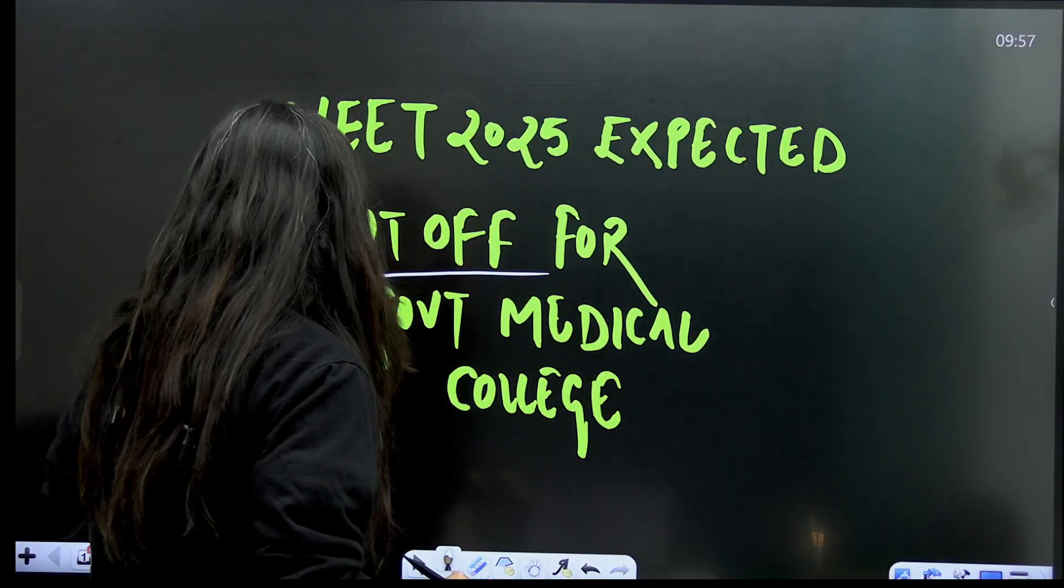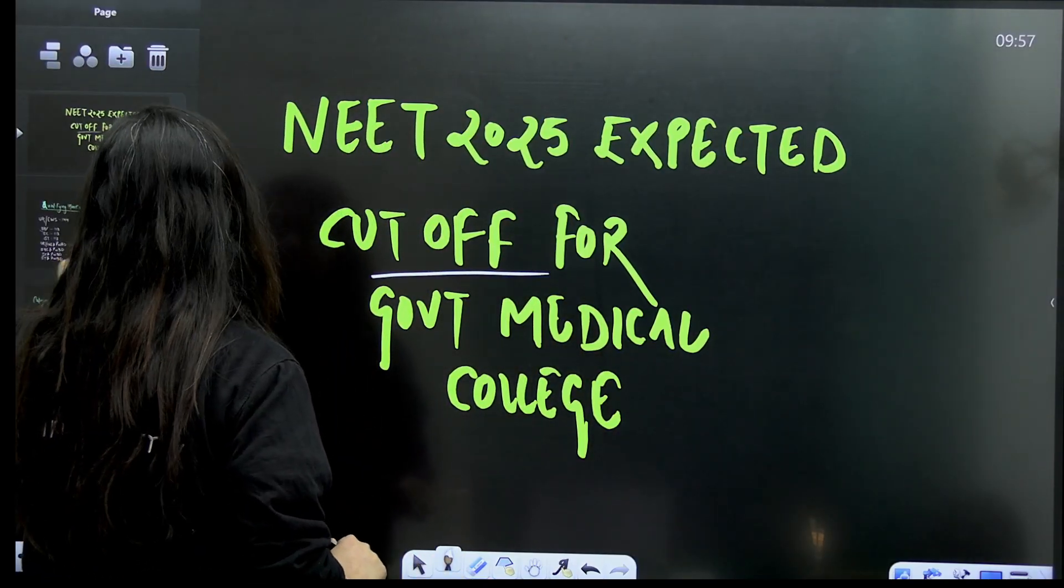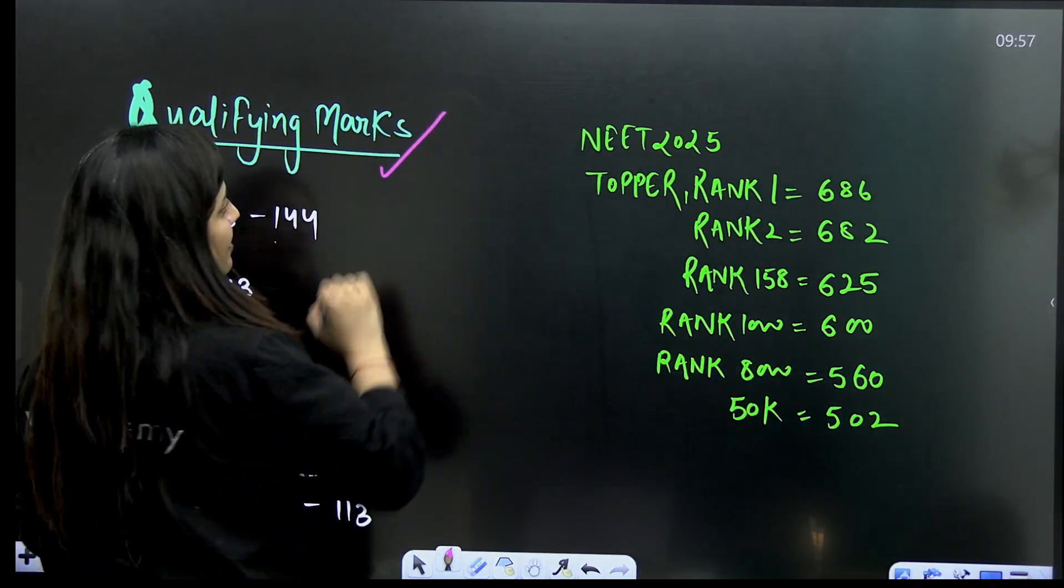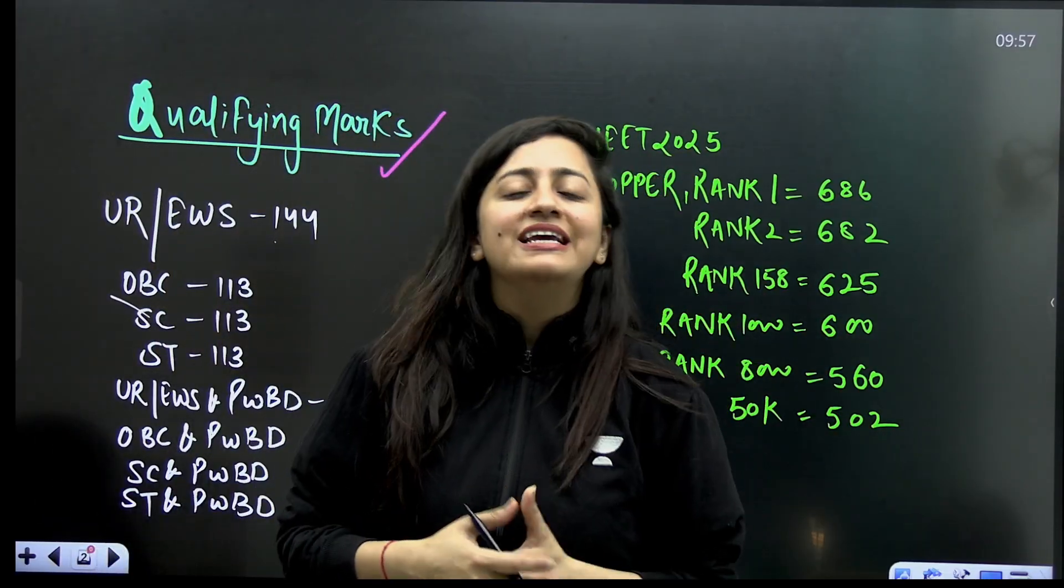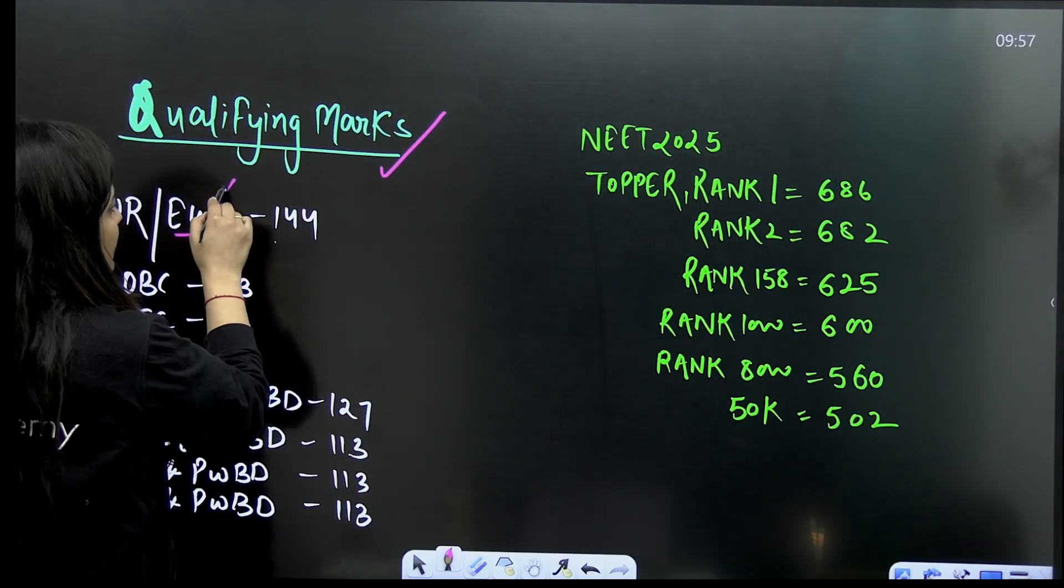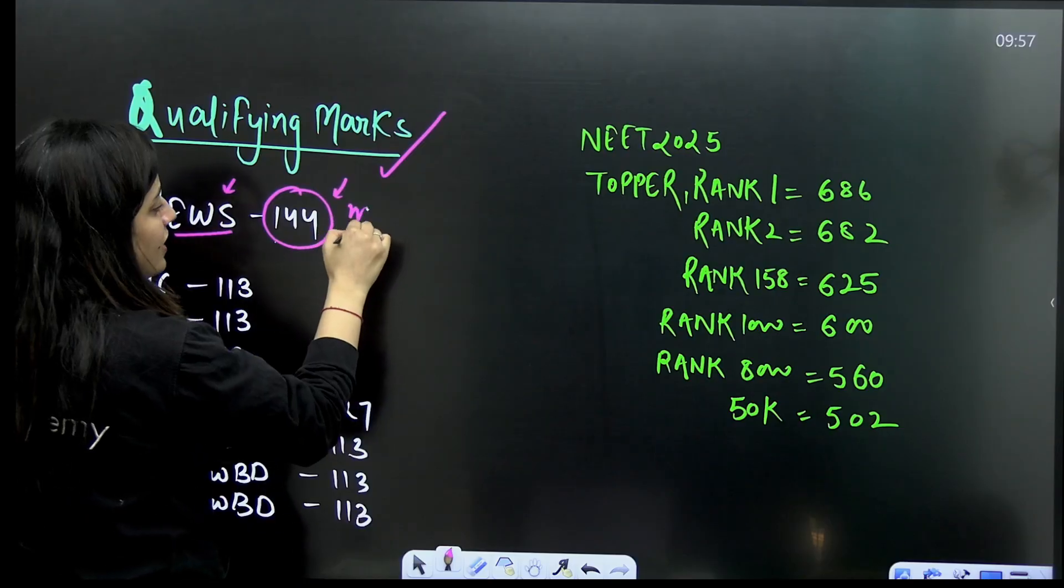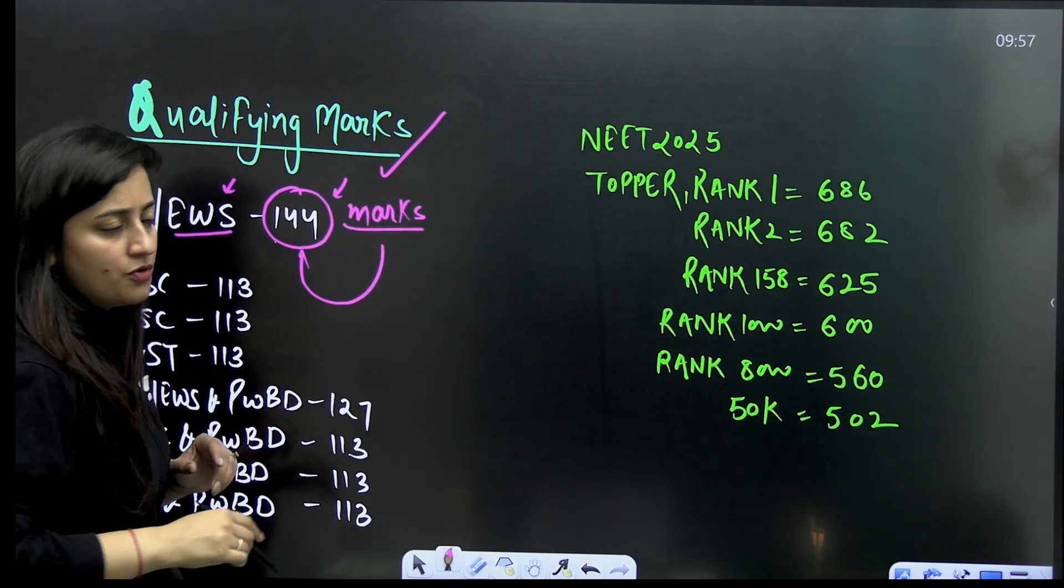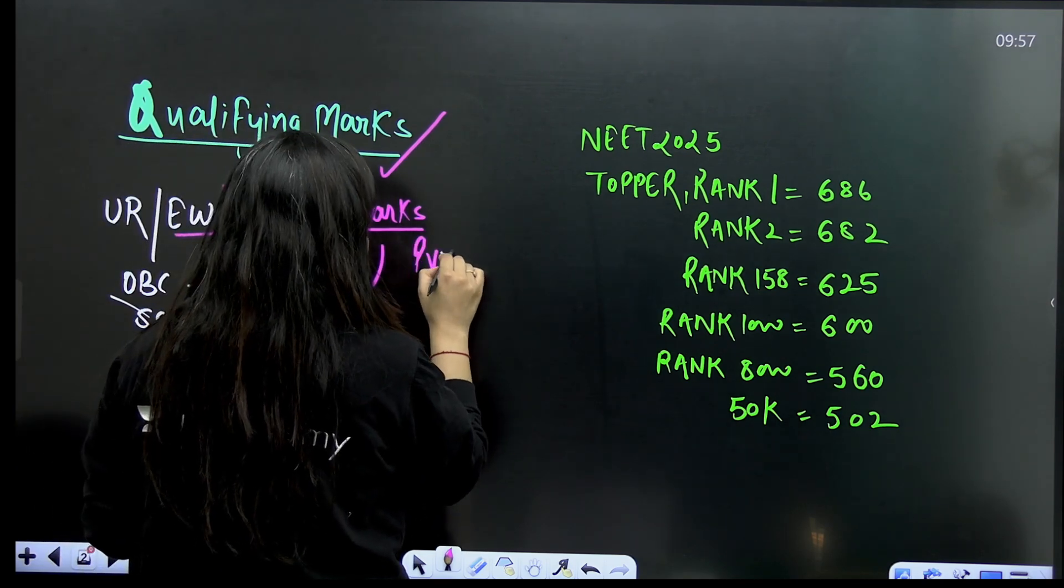Now let's talk about qualifying marks for NEET 2025. This is as per the official bulletin released by NTA after your result. For unreserved or EWS category it is 144 marks. This means if you're getting 144 marks, yes, you can take admission in private medical college because you need to qualify this mark.